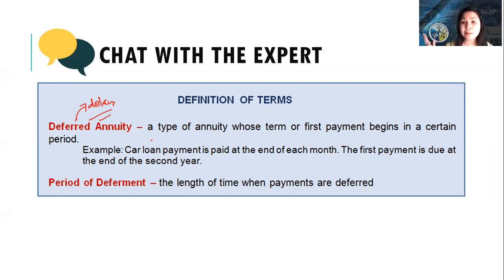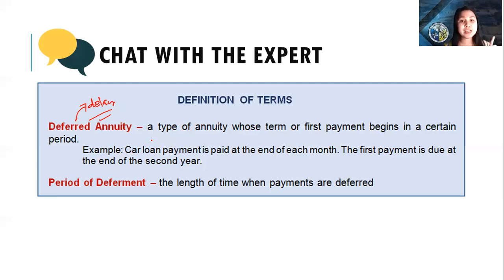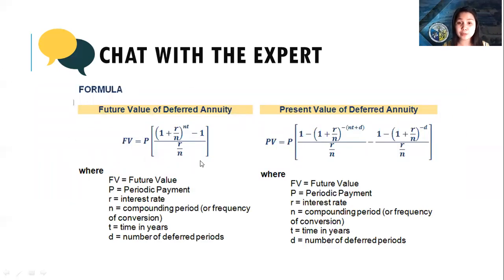What happens to the succeeding payments? In deferred annuity, the succeeding payments are regularly given — it's only the first payment that is being delayed. Just like going to Yamaha for a five-year loan and starting to pay in the second year. That one year of delay is called the period of deferment. Here are the formulas: one for the future value of deferred annuity, and another for the present value of deferred annuity. For example, if you went to Yamaha and the motorcycle costs $50,000, that $50,000 is called the present value.